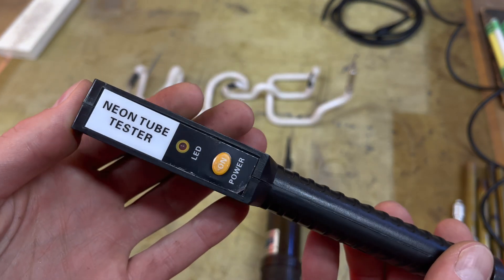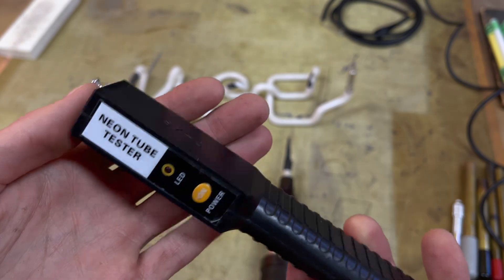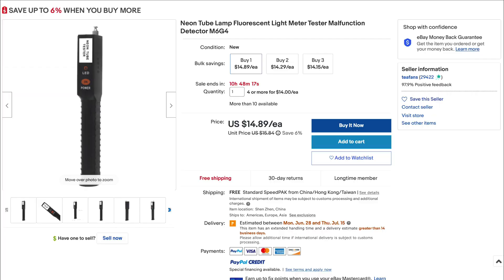For these little tube testers the sign supply shops will try to sell them for like 50 bucks, but you could find them easily on eBay and Amazon for 15 dollars. So check there.